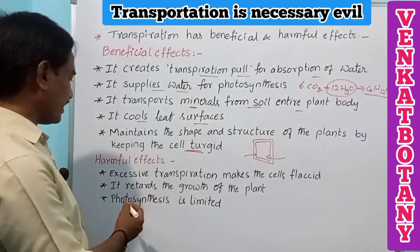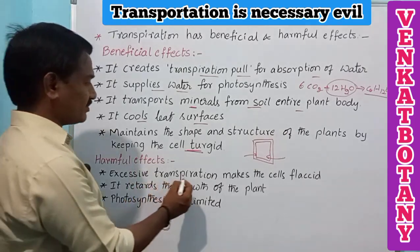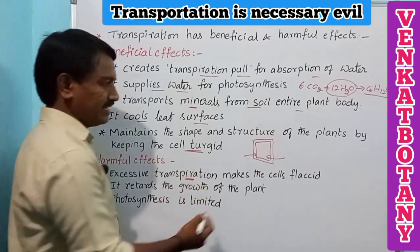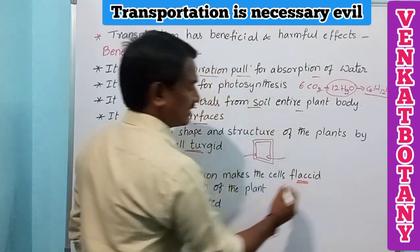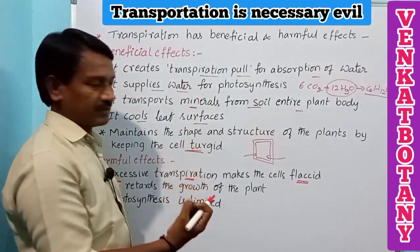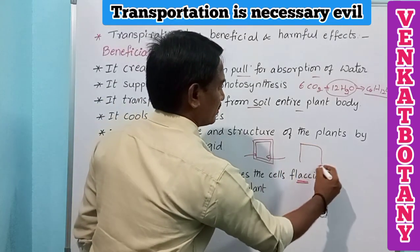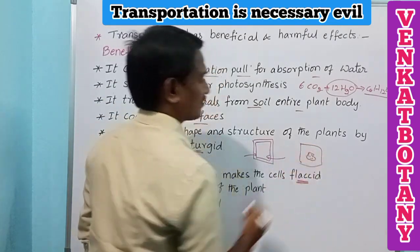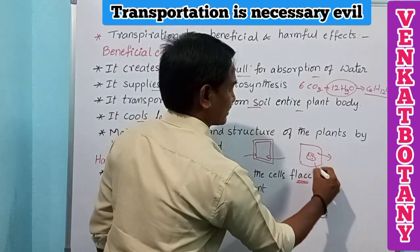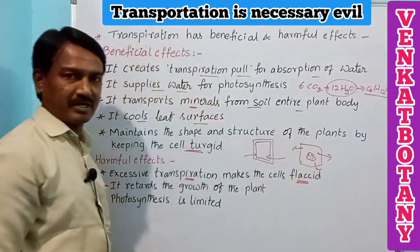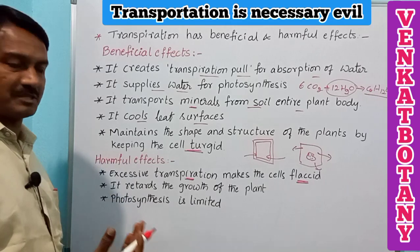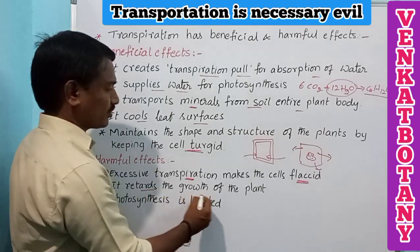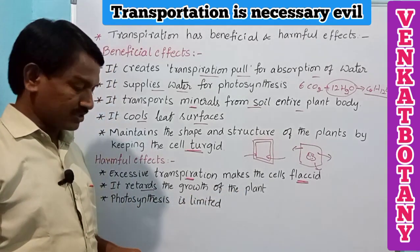When transpiration is excessive, it makes the cells flaccid, causing wilting and folding. The cell undergoes flaccidity because it loses water molecules from the plant body due to excessive transpiration.